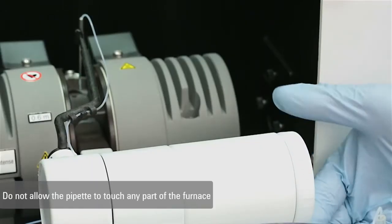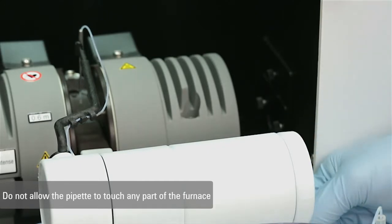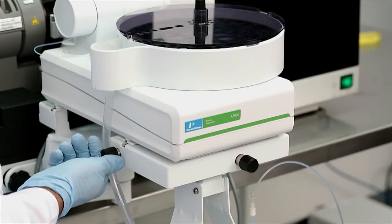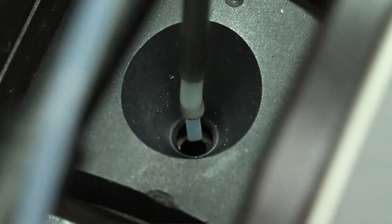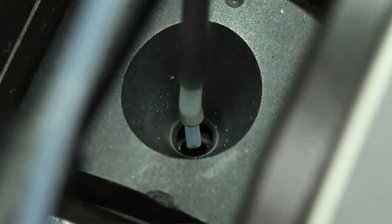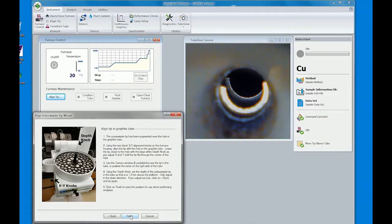Use the depth control wheel to lower the pipette tip until it is just above the graphite tube. Continue lowering the tip and adjusting its position left and right, forward and backward until the pipette tip is positioned just inside the injection hole of the graphite tube.